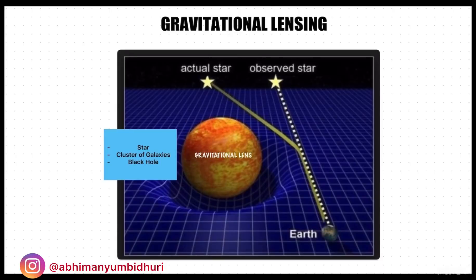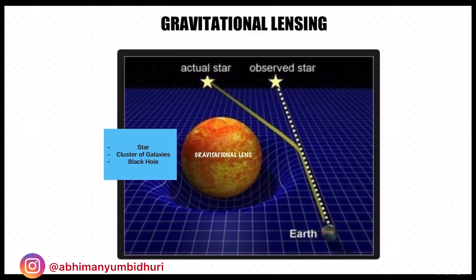At times, massive celestial bodies such as a big star, galaxy cluster, or a black hole cause sufficient curvature of space-time for the path of light around it to be visibly bent as if by a lens, giving a distorted picture to the observer. The body causing the light to curve is accordingly called a gravitational lens, and this phenomenon is called gravitational lensing.